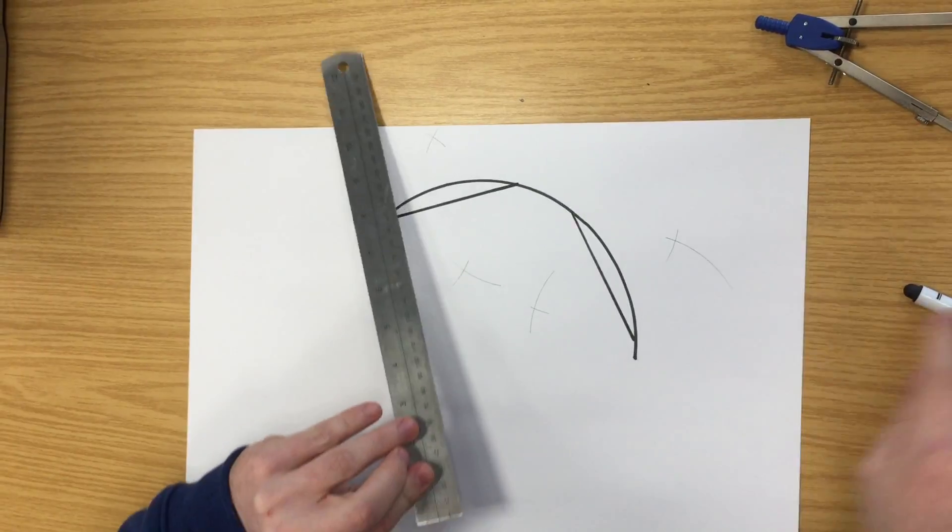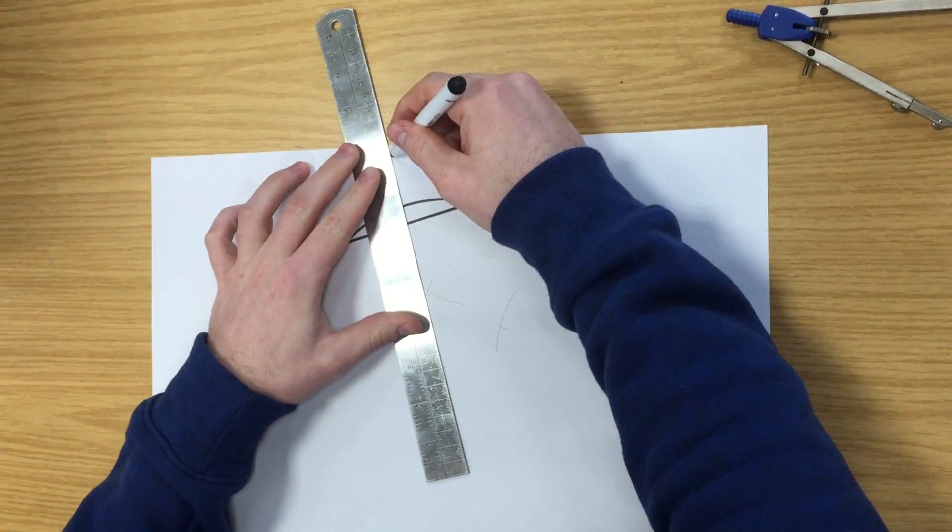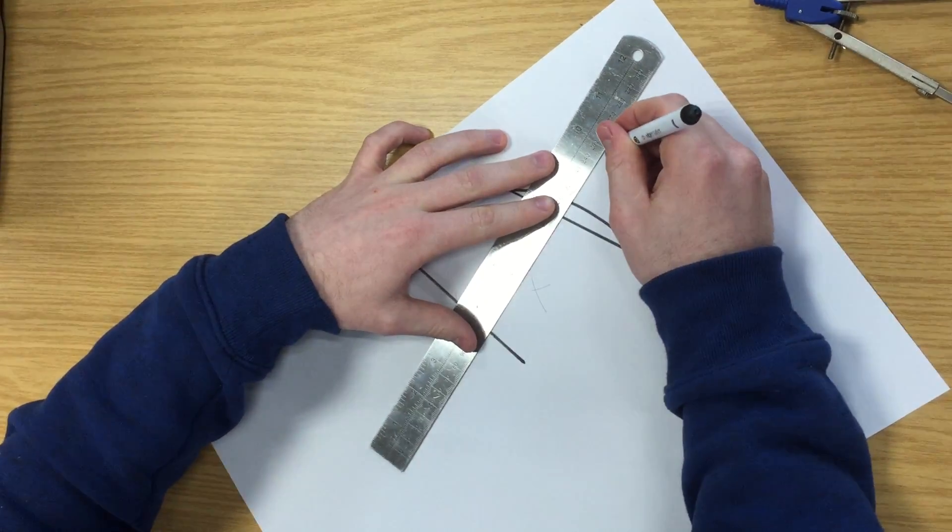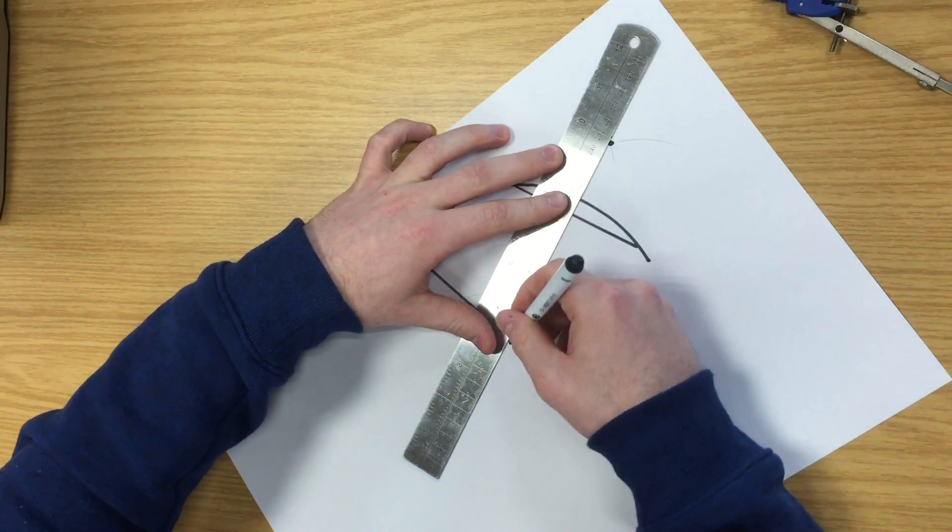Once we have bisected them, we just join up two points like that and continue the lines out. Those two lines should give us the center point.